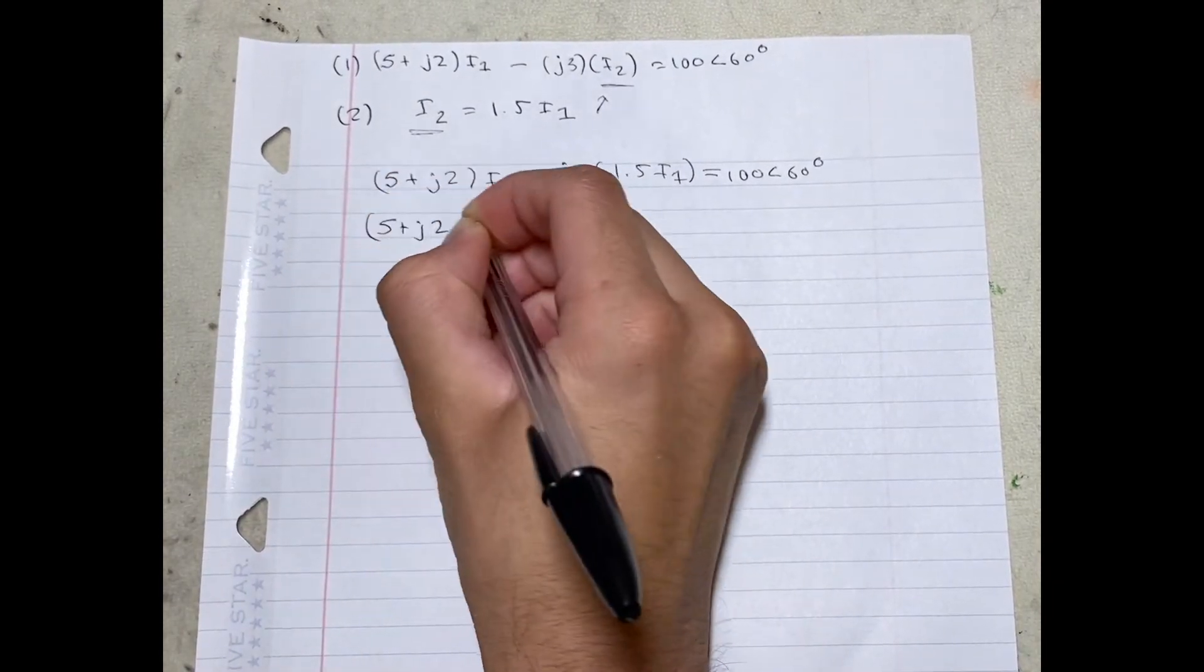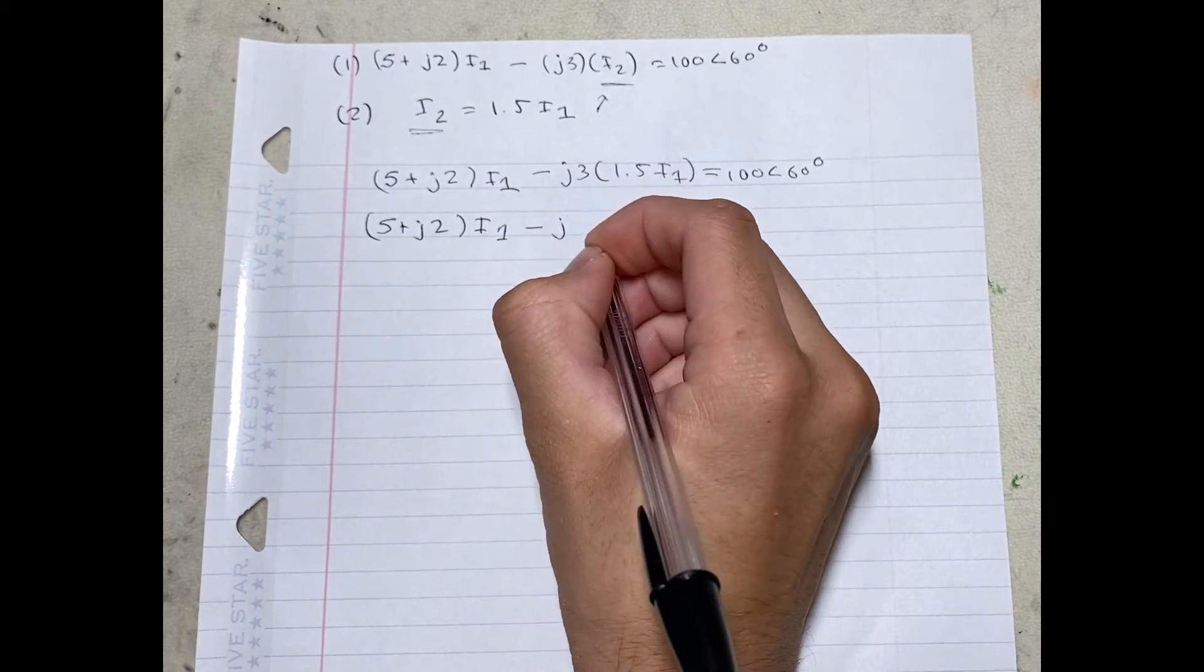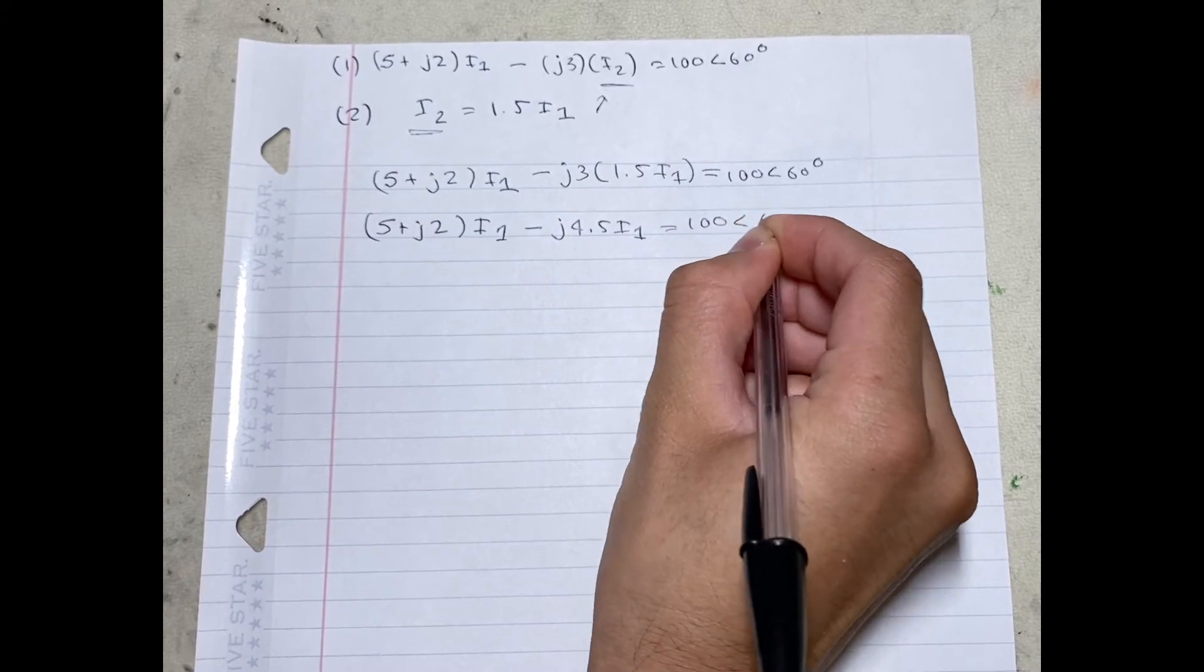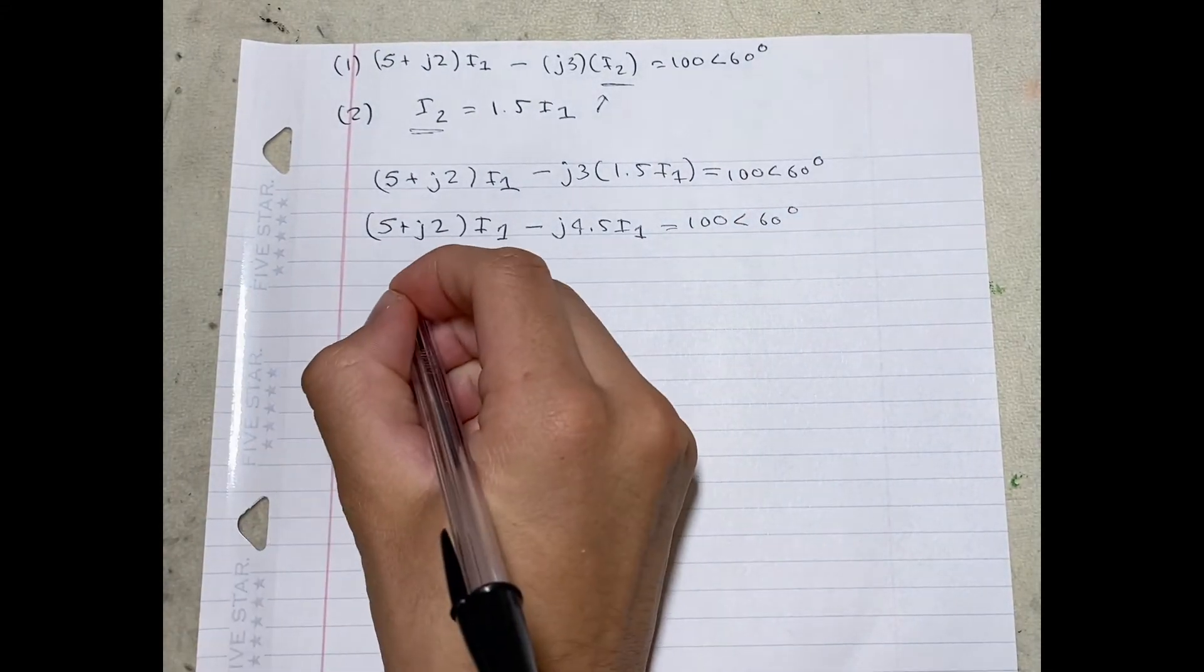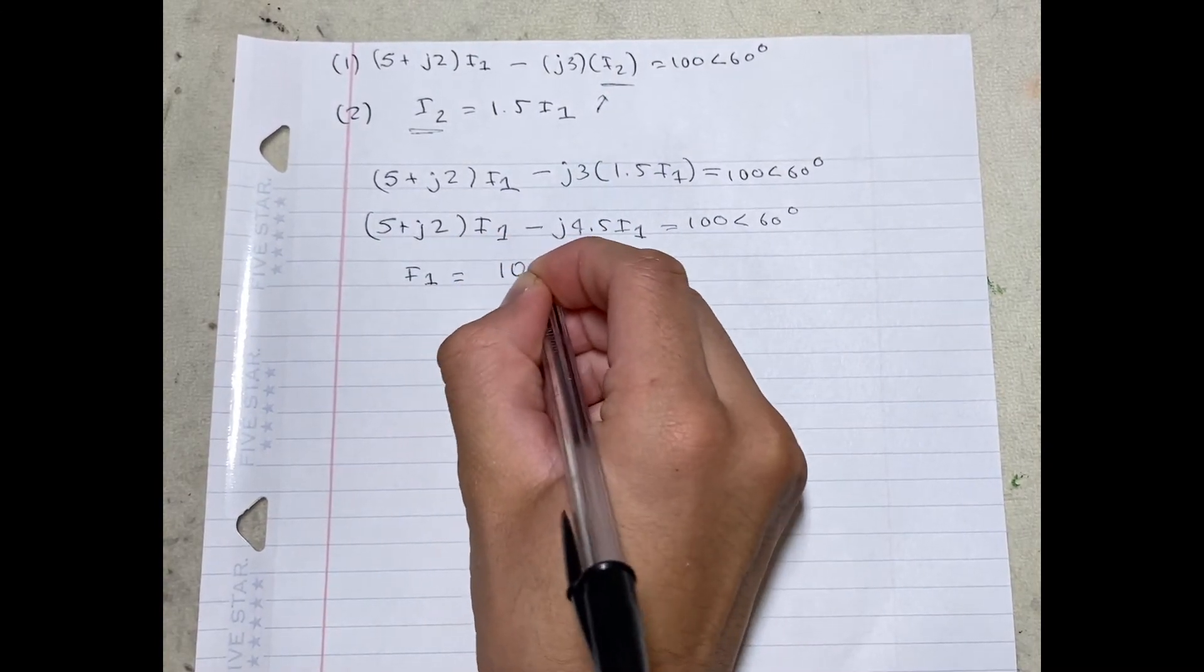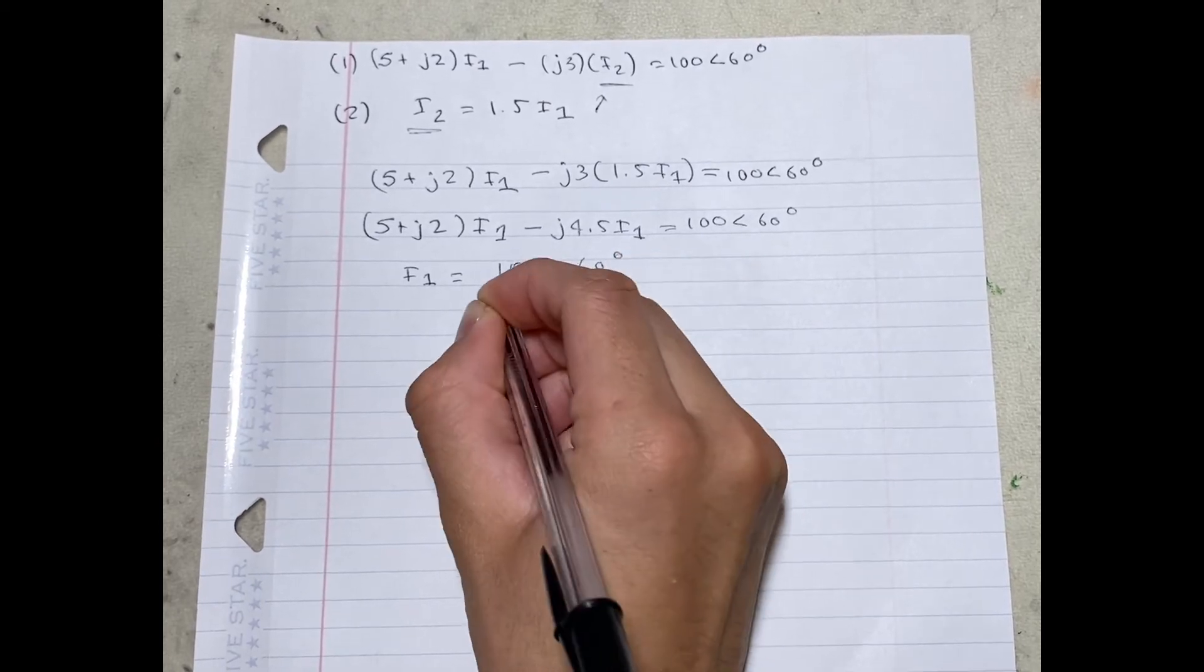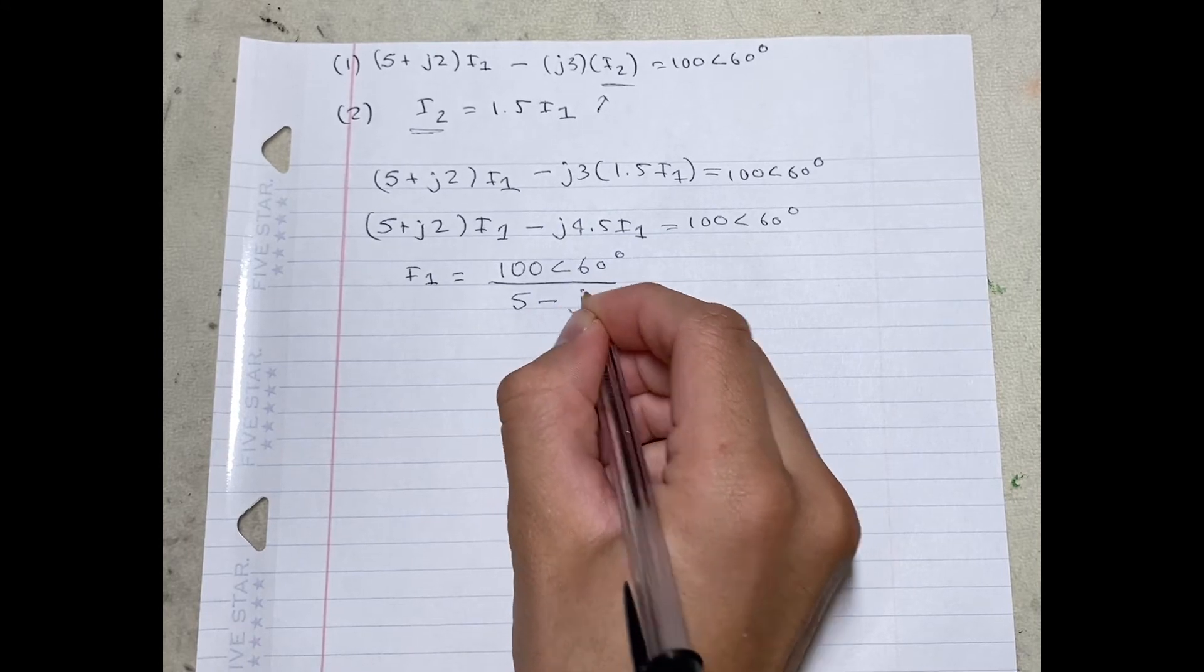We can simplify that further by writing 5 plus J2 times I1 minus J4.5 I1 is equal to 100 angle 60 degrees. This can be simplified further and be written as I1 is equal to 100 angle 60 degrees divided by 5 minus J of 2.5.